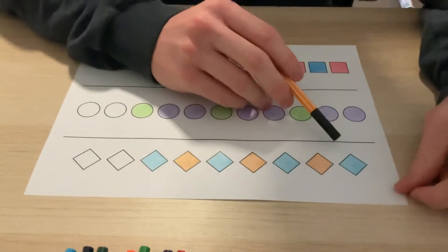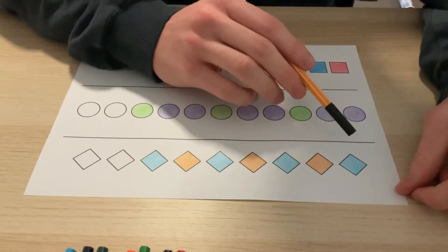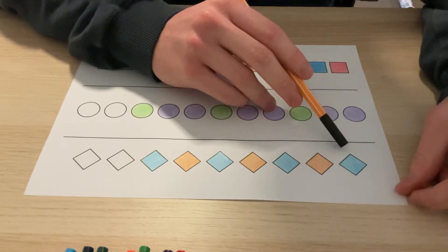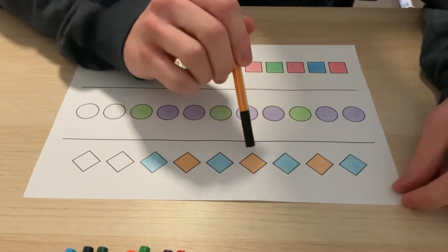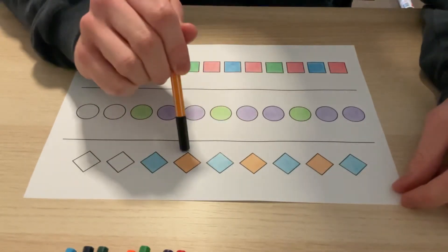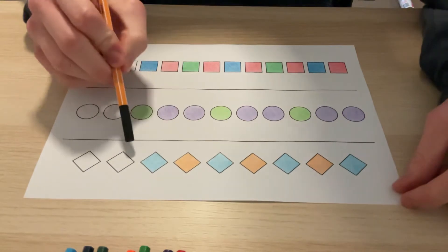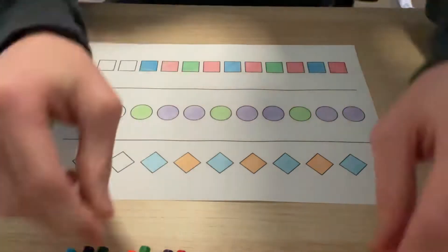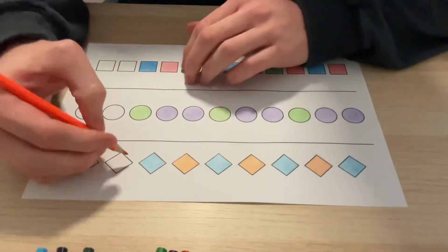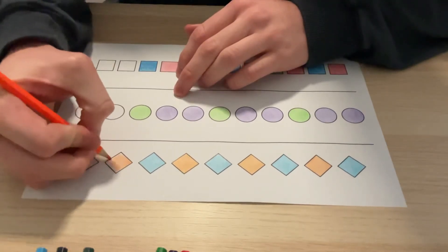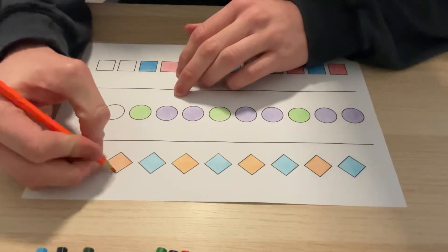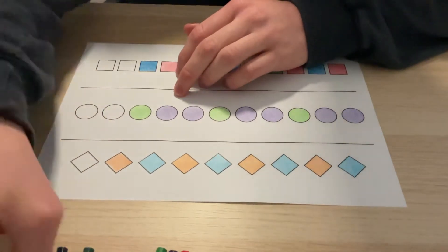We'll start with the first one here, which is a very simple pattern. It's just an alternating pattern with two colors, nice and simple. So it just goes blue, orange, and then it'll just repeat blue, orange, blue, orange, blue. And so then of course the last one here will be orange, so we can just pop that in quickly.